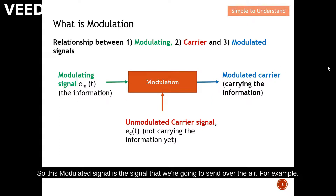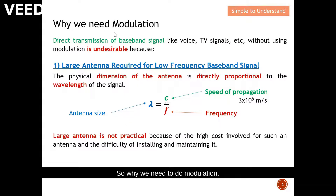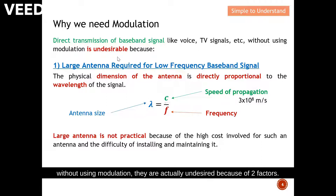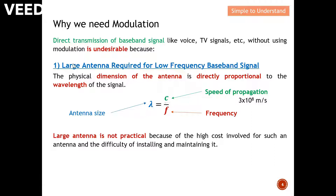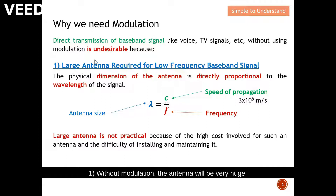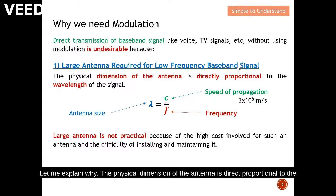Let's understand why we need modulation. Direct transmission of a baseband signal — like our voice, TV signal, etc. — without using modulation is undesirable because of two factors. Number one: without modulation, the antenna will be very huge. A large antenna is normally required for a very low frequency baseband signal. Let me explain why.